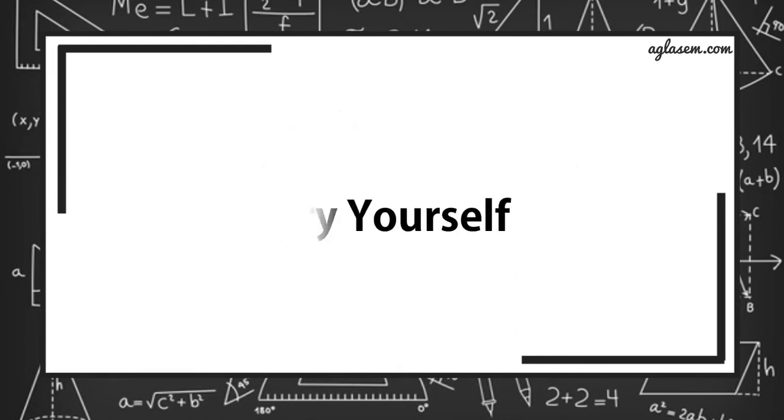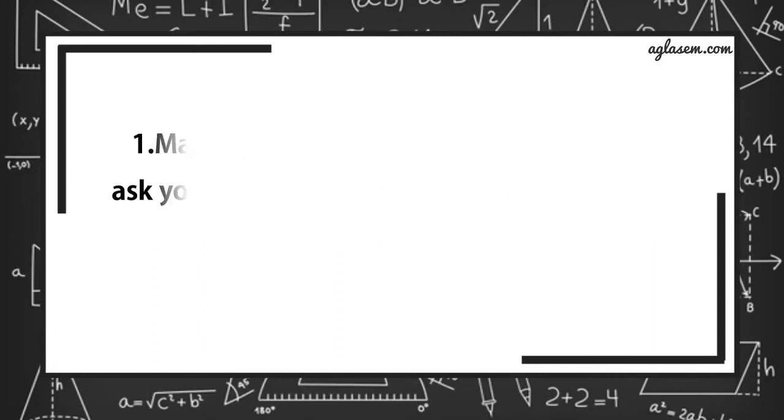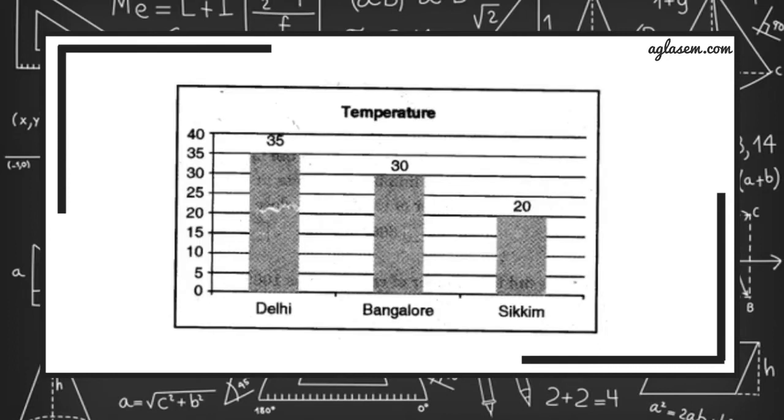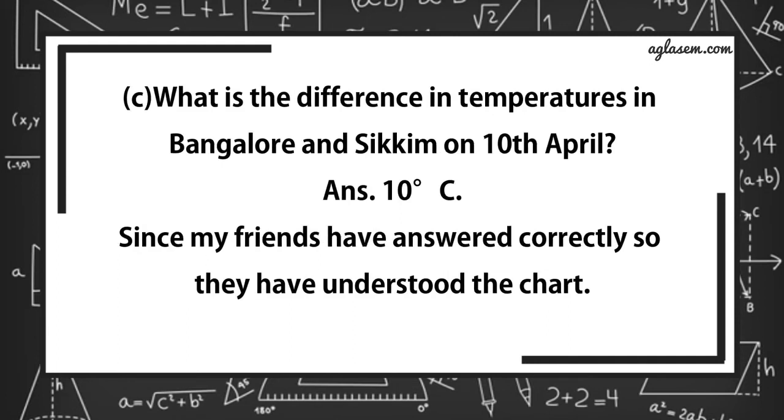Now, try yourself. On any one day, choose any three cities and record their temperature from the TV or newspaper. Make a bar chart in your notebook and ask your friends a few questions about it. See if they understand your chart. Answer is, let us show the highest temperature in degrees Celsius in three cities. That is, in Delhi, Bangalore and Sikkim. Here is a bar graph. Now, answer these. Which city is the hottest on 10th of April? Answer is, Delhi. Which city is the coldest on 10th of April? Answer is, Sikkim. What is the difference in temperature in Bangalore and Sikkim on 10th of April? Answer is, 10 degrees Celsius. Since my friends have answered correctly, so they have understood the chart.